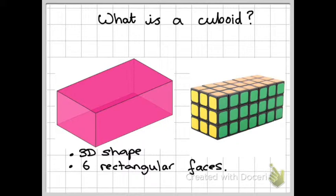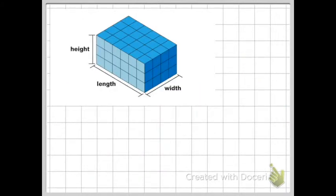So what's a cuboid? Well, a cuboid is also a 3D shape and that has six rectangular faces, and here's a very stretched Rubik's cube.